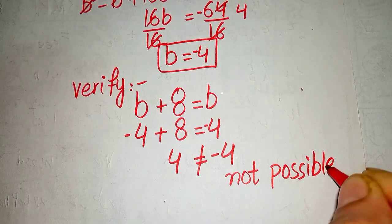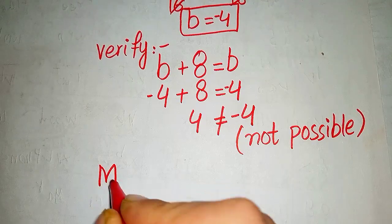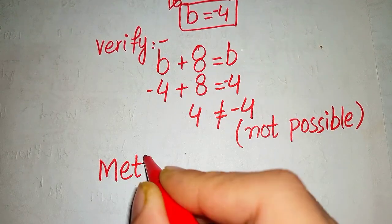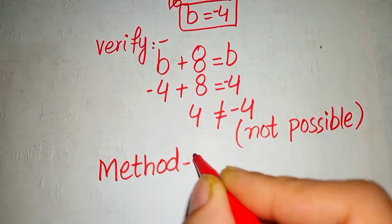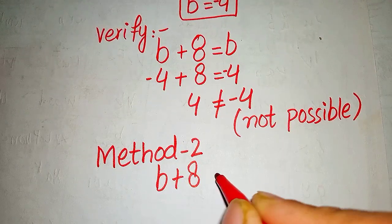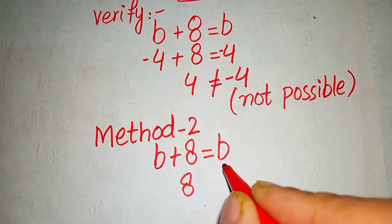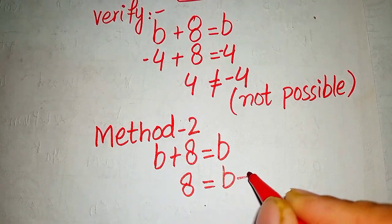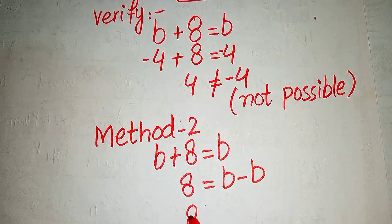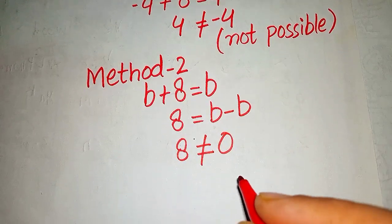Now we apply method 2. First of all we write our equation: b plus 8 equals to b. When we take this b to the right side it would become 8 equals to b minus b.